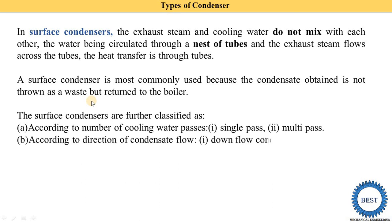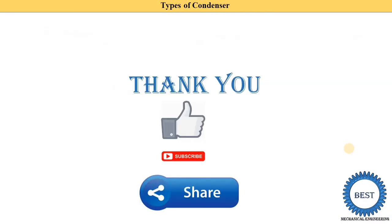The second classification is according to the direction of condensate flow. If the condensate flows in a downward direction, it is called a down-flow condenser. If the condensate flows towards the center, it is called a central-flow condenser. These are the types of surface condensers. Thank you for watching this video. If you learned something, please like the video, subscribe to my channel, and don't forget to share it with your friends.